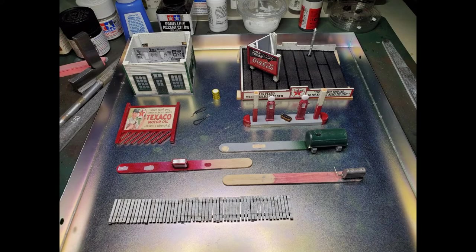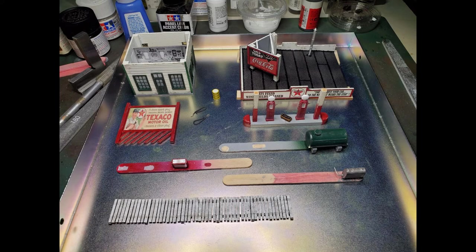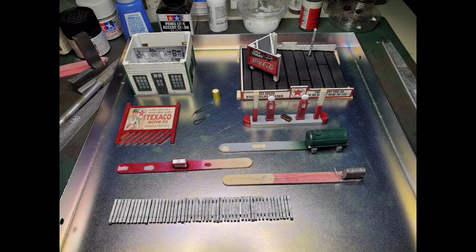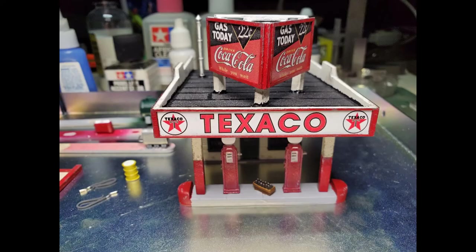I use that sponge weathering technique on all of the sub assemblies. So there's a little bit done to the main structure. There's some done to the edges of the roof, the edges of the sign, the concrete island ends, the posts, the pumps, the coke machine, all of it.